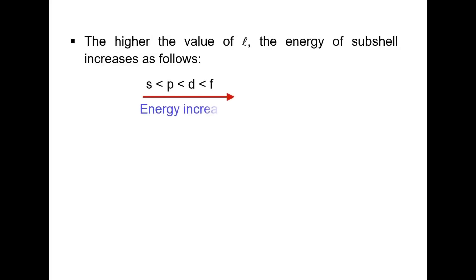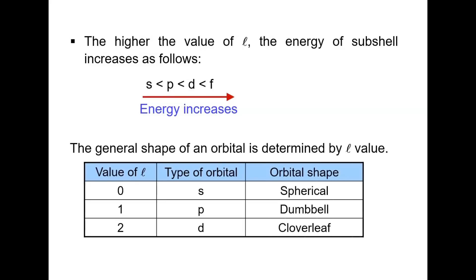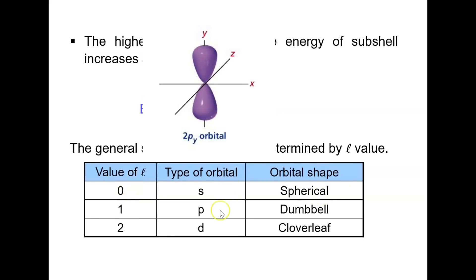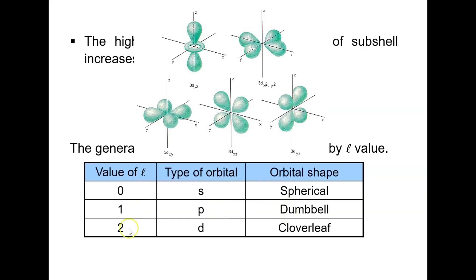The higher the value of L, the higher the energy of the sub-shell. The S orbital has lower energy compared to the P orbital, D orbital has higher energy than P, and F has the highest energy. The general shape determined by L is: L=0 gives a spherical S orbital, L=1 gives a dumbbell-shaped P orbital, and L=2 gives a cloverleaf-shaped D orbital.